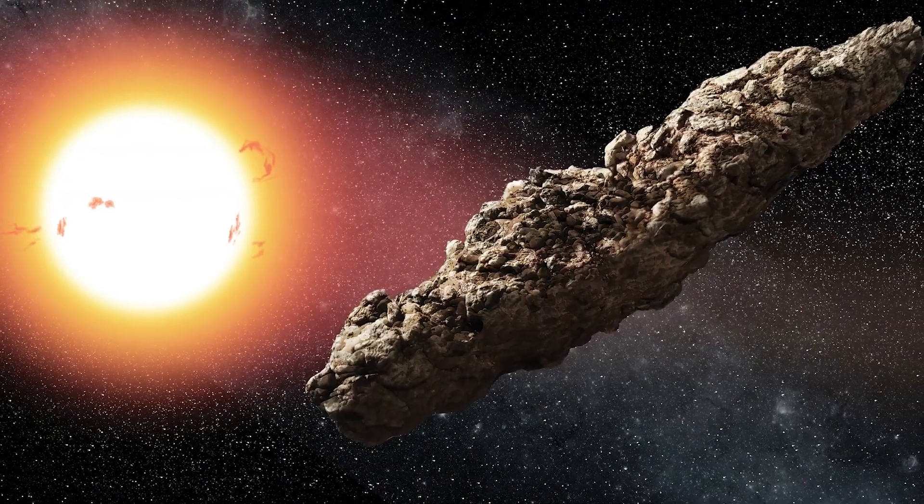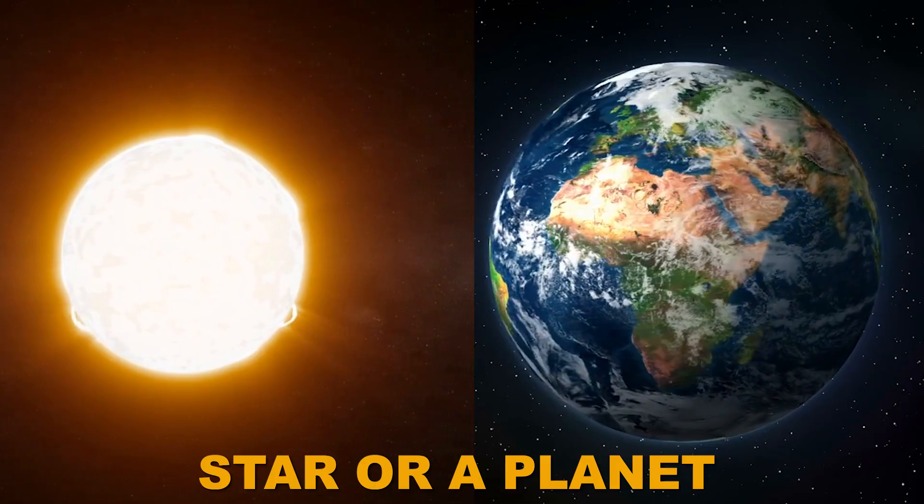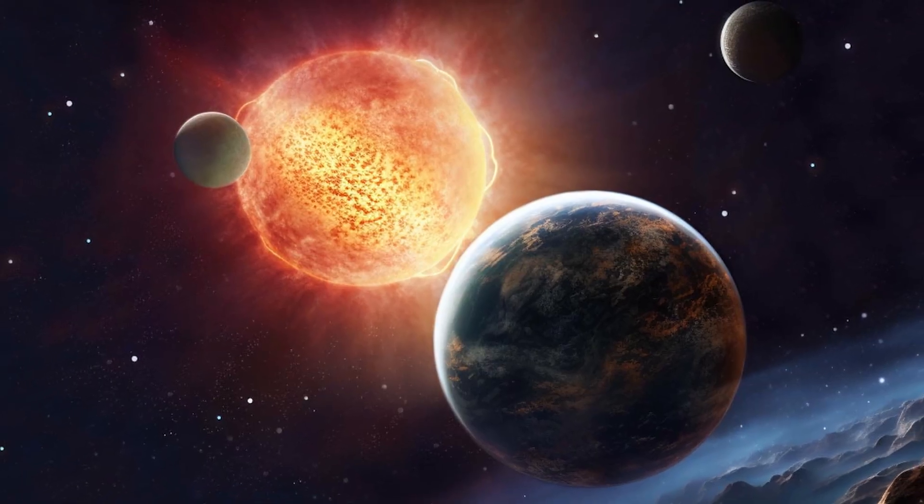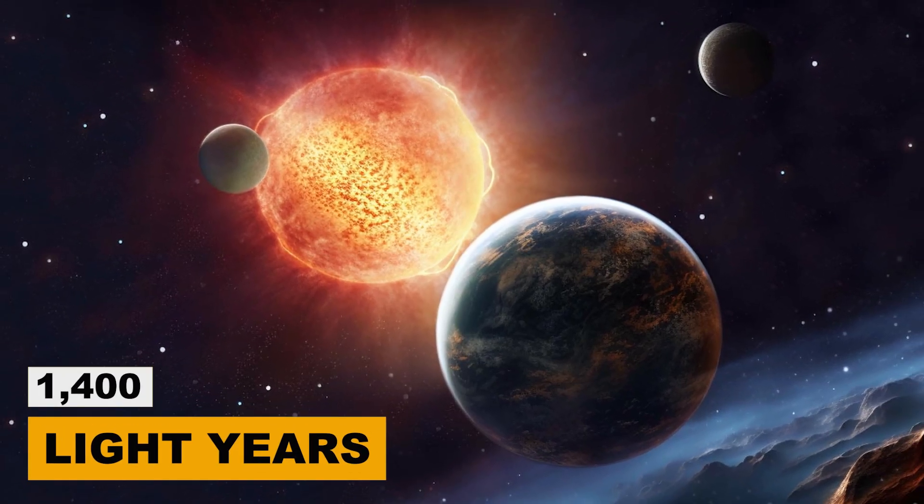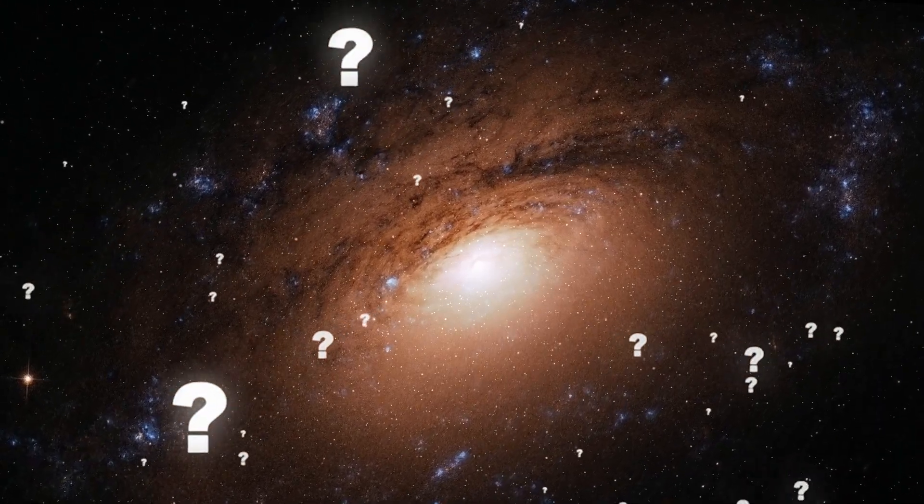It seems scientists have come across a strange object in space, and they're not sure if it's a star or a planet. What we do know is that it's located 1,400 light-years away from us, and it makes us question what we thought we knew about the universe. Let me explain the dilemma here.